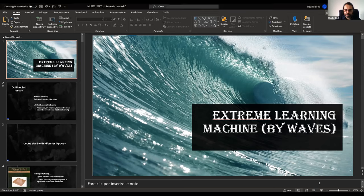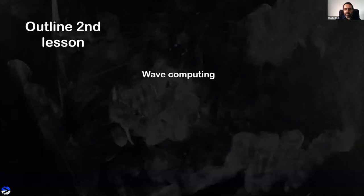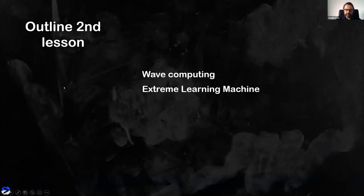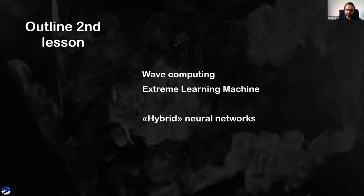The title of this second lesson is 'Extreme Learning Machine,' and I add 'biowaves' because I want to link this topic with so-called wave computing. I will introduce wave computing, explain what it means and how it relates to neural networks, then describe a very simple device which is a good starting point for working in the lab and for modeling these devices.